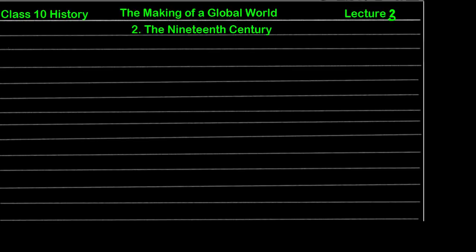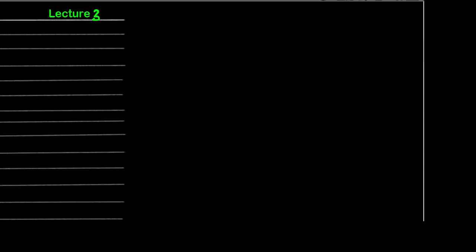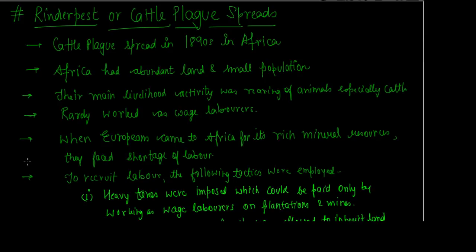We have completed the last part of this chapter in the previous video. In this video, we will be looking at the other half, which will basically deal with the colonial effects on Africa, indentured labor, and how British and colonial powers took indentured labor in different areas of the world. We will also discuss India's trade and its global impact.